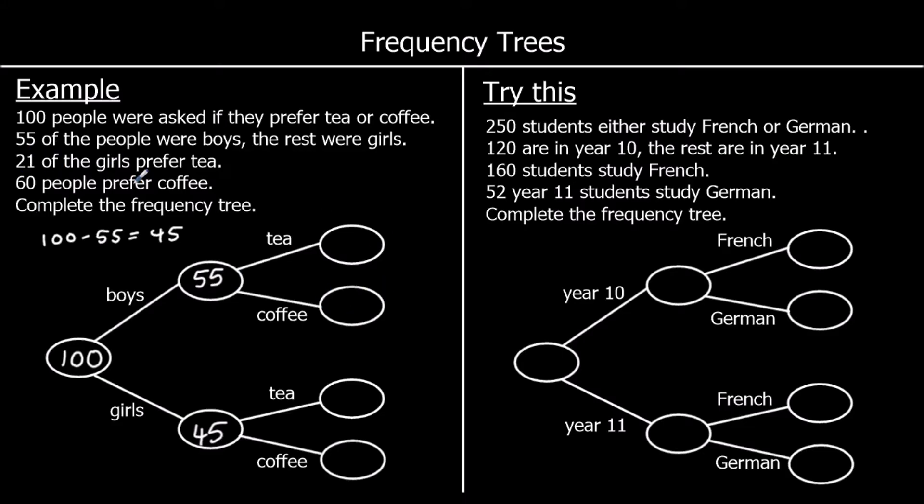We're told 21 of the girls prefer tea. So the girls tea box is 21. And the rest of the girls must like coffee. So 45 take away 21 is 24. So 24 girls must prefer coffee.